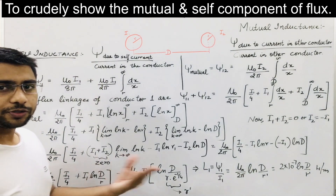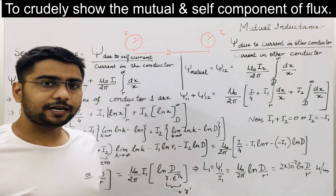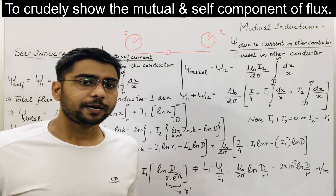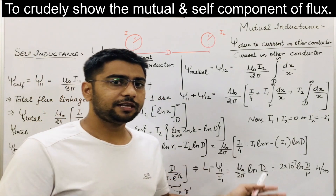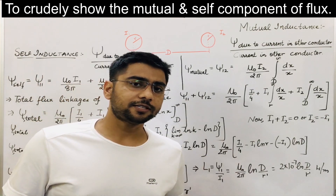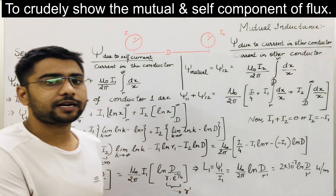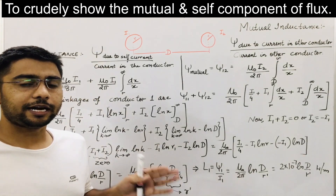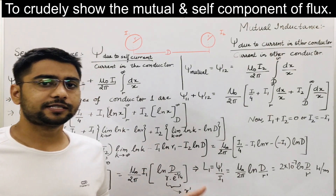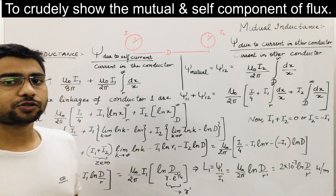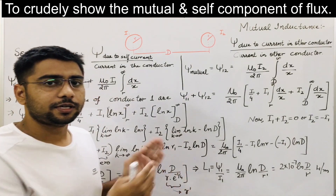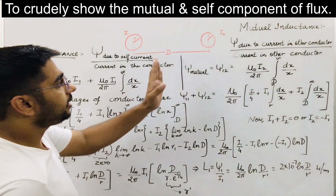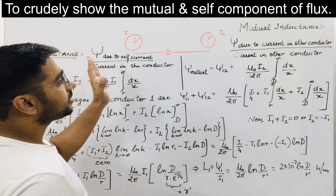This question usually does not come in the exam directly, but it creates a doubt in the minds of students: whenever we derive the total inductance of a conductor, how do we account for the mutual inductance part and the self inductance part? To clarify those concepts, we are trying to find the inductance separately.